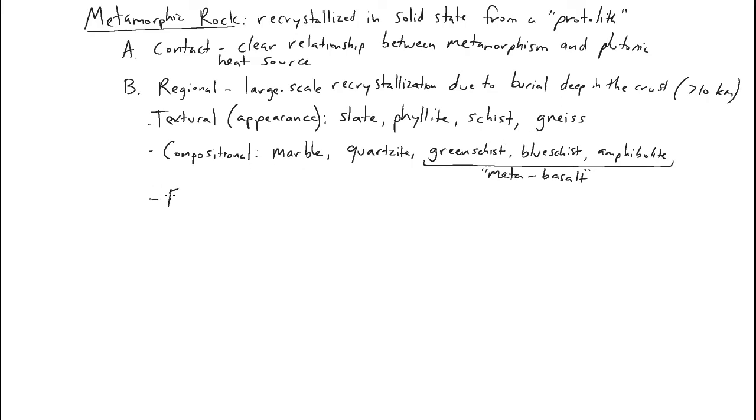And then we have what we call metamorphic facies or grades. This has to do more with the severity of the temperature and pressure that they've experienced. They're named after what happens to a metabasalt at different temperatures. The lowest temperature that we notice is blueschist or greenschist facies. These form at 300 to 400 degrees Celsius. If the rocks get to higher temperatures we call them amphibolite facies rocks, around 500 degrees. If they get really cooked, granulite facies, this would be like 650 to 750 degrees.